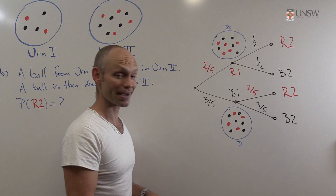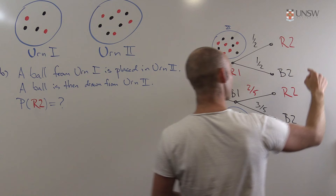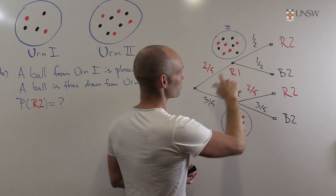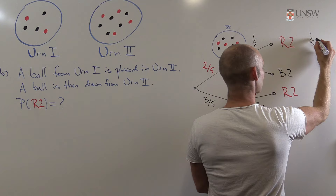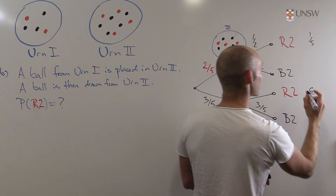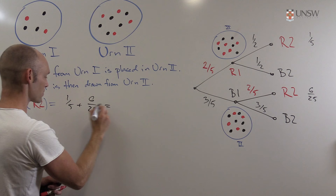Now we have all the probabilities needed to answer part B and part C. The probability of drawing a red ball from urn two is the sum of two paths: (2/5 × 1/2) + (3/5 × 2/5) = 1/5 + 6/25 = 5/25 + 6/25 = 11/25.